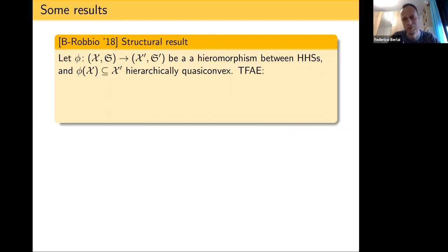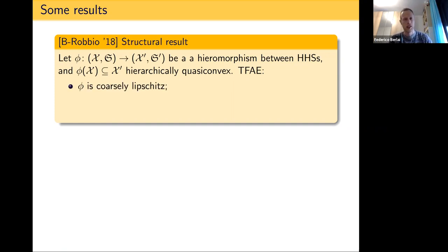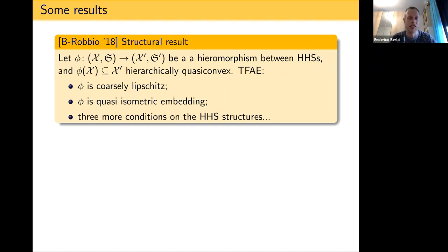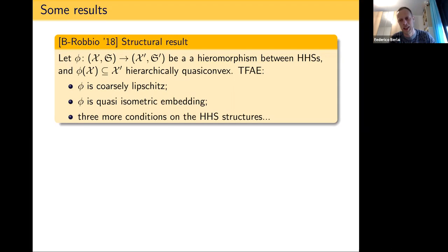Our first result in the direction of graph products of HHGs was a technical result on hierarchical morphisms — morphisms of hierarchical hyperbolic spaces. It turns out that a weaker metric condition on these maps is already equivalent to a stronger metric condition, and these conditions are equivalent to some other conditions detected inside the hierarchical hyperbolic structures of X and X'.